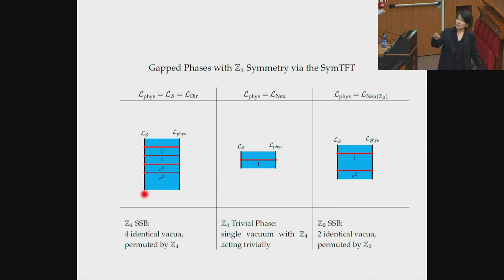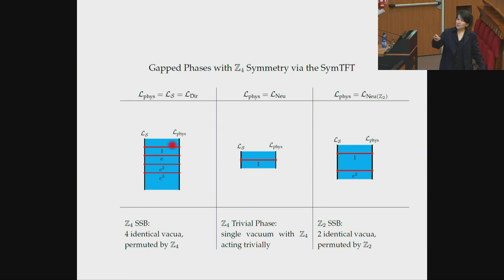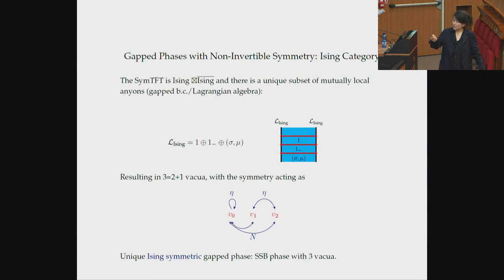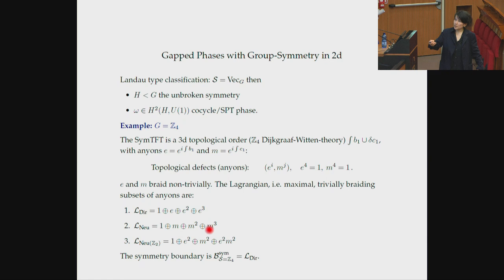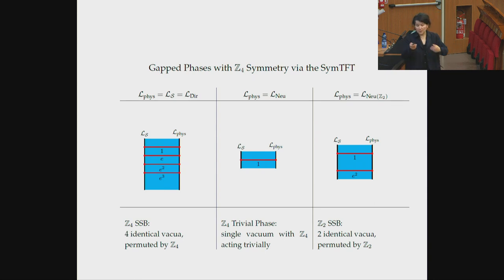Fixing the Z4 symmetry boundary and choosing the same boundary condition as the physical one: every line E, E-squared, E-cubed can all end, giving four non-trivial order parameters and four vacua — precisely the Z4 spontaneously broken symmetry phase. With the Neumann boundary condition using M, M-squared, M-cubed, I just have the identity line and get a single vacuum — that's a trivial phase. There's also a mixed boundary condition giving two vacua. This is precisely what we expected from Landau analysis, presented in the SymTFT picture.